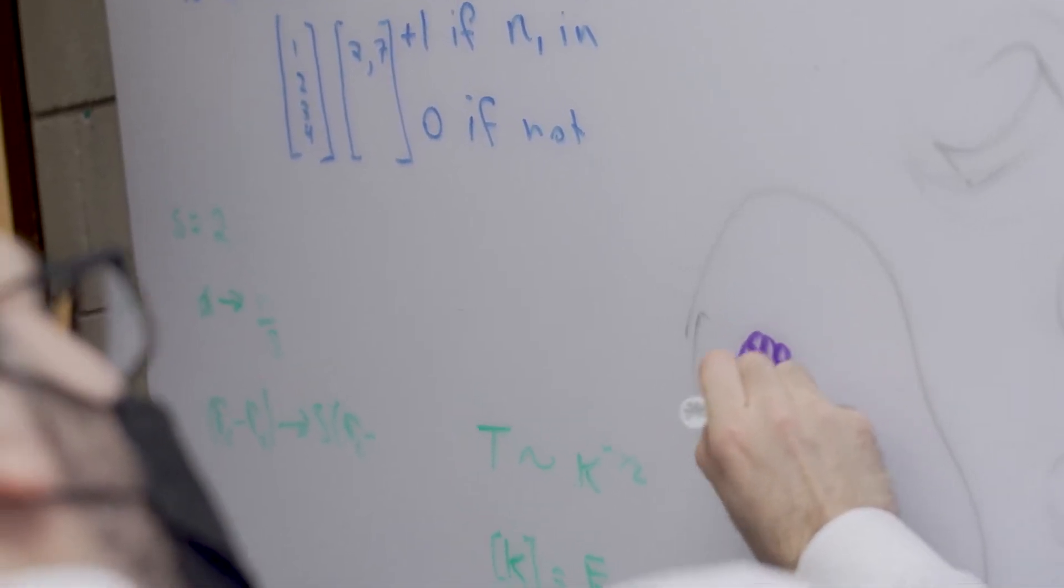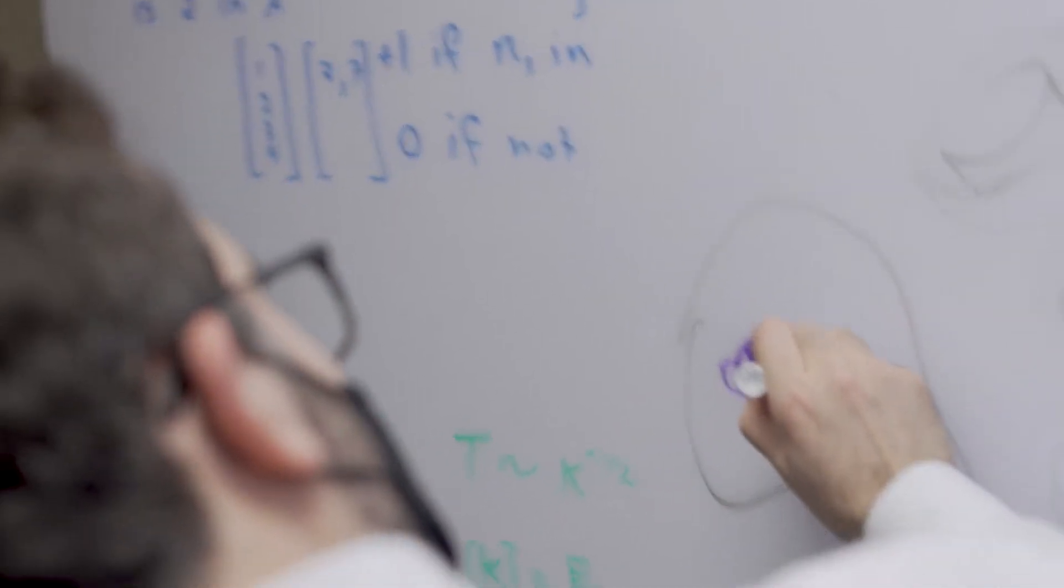We're asking questions about how polymers are constructed at the molecular scale and how we can engineer that molecular scale structure to make them more easily broken down or potentially transformed and recovered and turned into something more valuable.